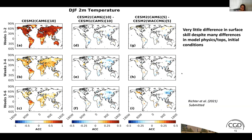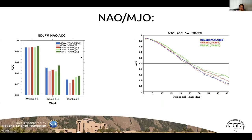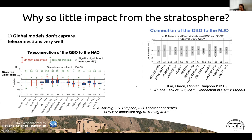For NAO and MJO, there are slightly more differences: WACCM with five ensemble members shows a bit higher NAO skill than the other systems, but due to the small number of hindcast years, these differences are not statistically significant. All systems show good NAO skill up to weeks 3–4 with ACC near 0.5, but they are essentially equivalent. Similarly for the MJO, there is very little difference between these model versions.